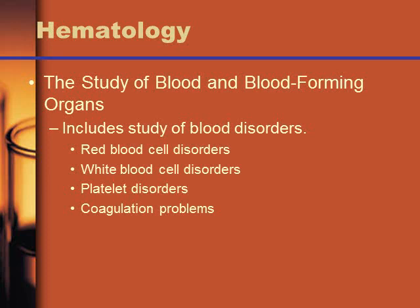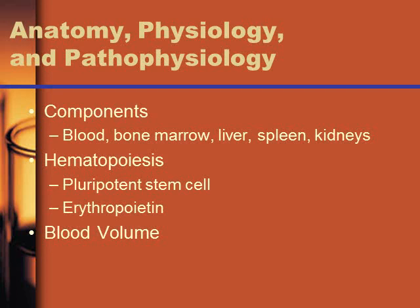The study of blood and blood-forming organs includes the study of blood disorders. We have red blood cell disorders like anemia, white blood cell disorders like leukemia, platelet disorders like thrombocytopenia, and coagulation problems like hemophilia. We're going to talk about all of those.